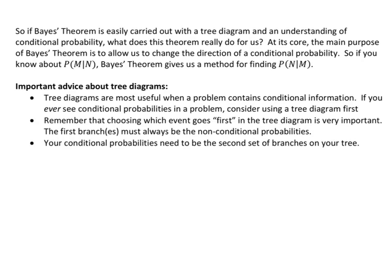I suppose I need to tell you what Bayes' Theorem really does for us. At its core, the main purpose of Bayes' Theorem basically allows us to change the direction of a conditional probability. So if you know something like the probability of M given N, Bayes' Theorem would give us a method for finding the probability of N given M. Notice the order was flipped — N was the condition and M was the probability we wanted, and Bayes' Theorem lets us find what happens when M is the condition instead.